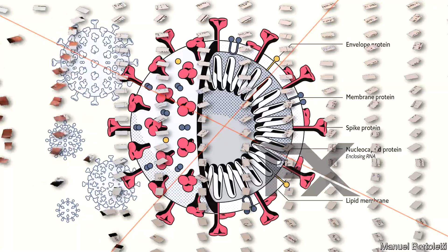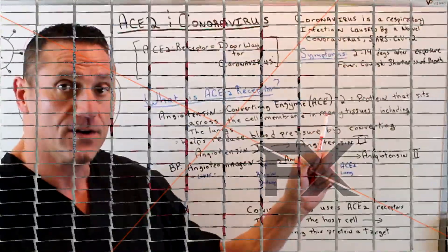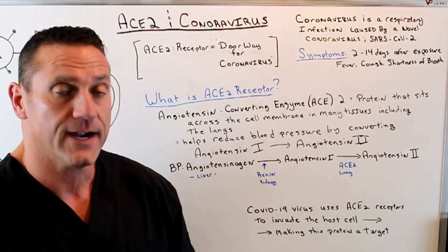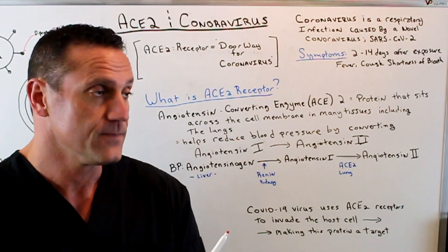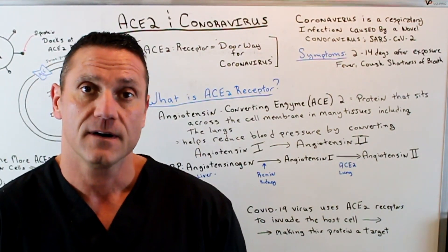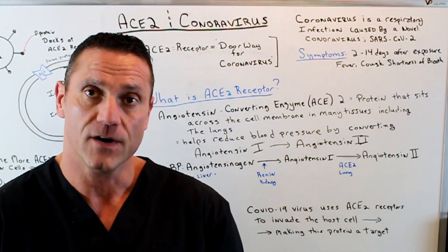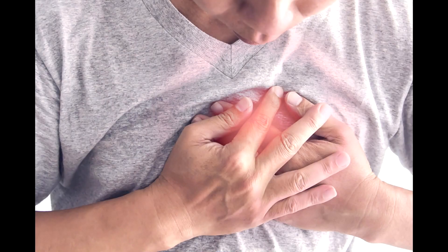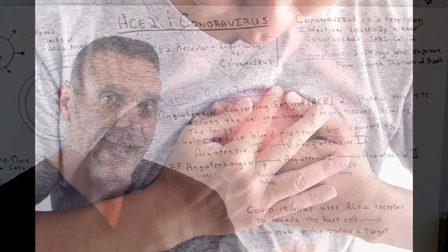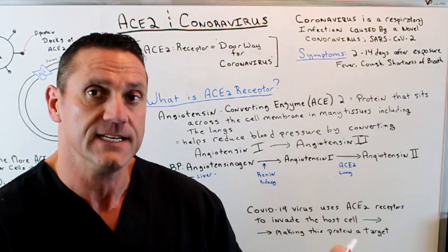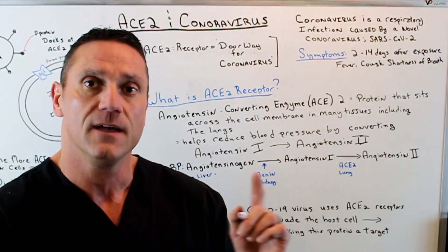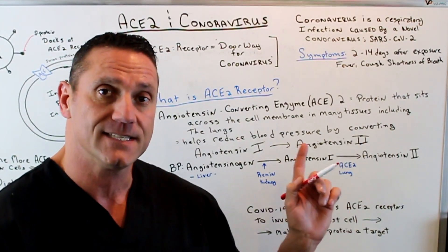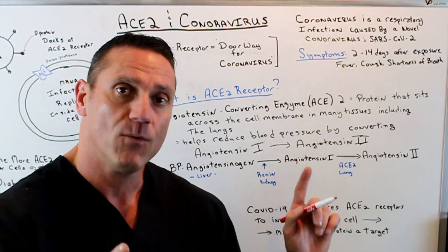The coronavirus is a respiratory infection caused by a novel coronavirus called SARS-CoV-2. The symptoms are fever, cough, but the main thing is shortness of breath. This is more gradual — it'll take anywhere from two to 14 days for the symptoms to gradually get worse and worse. The main thing about the coronavirus is that shortness of breath.